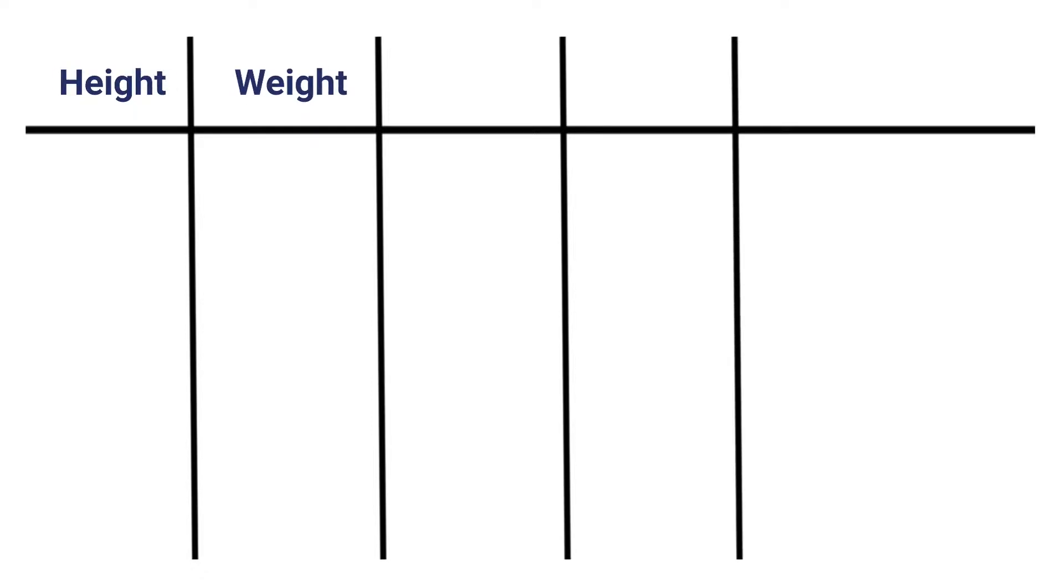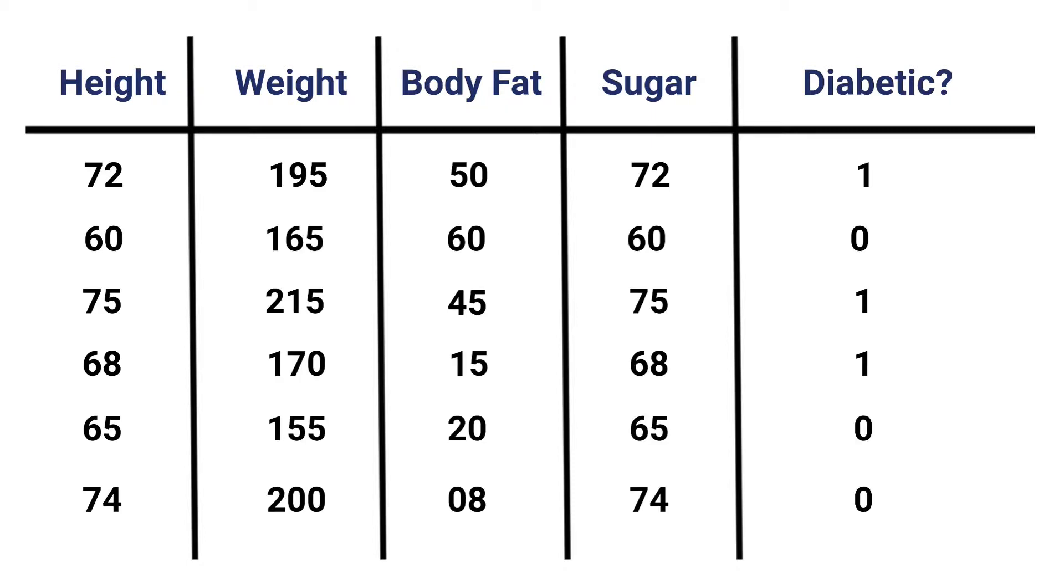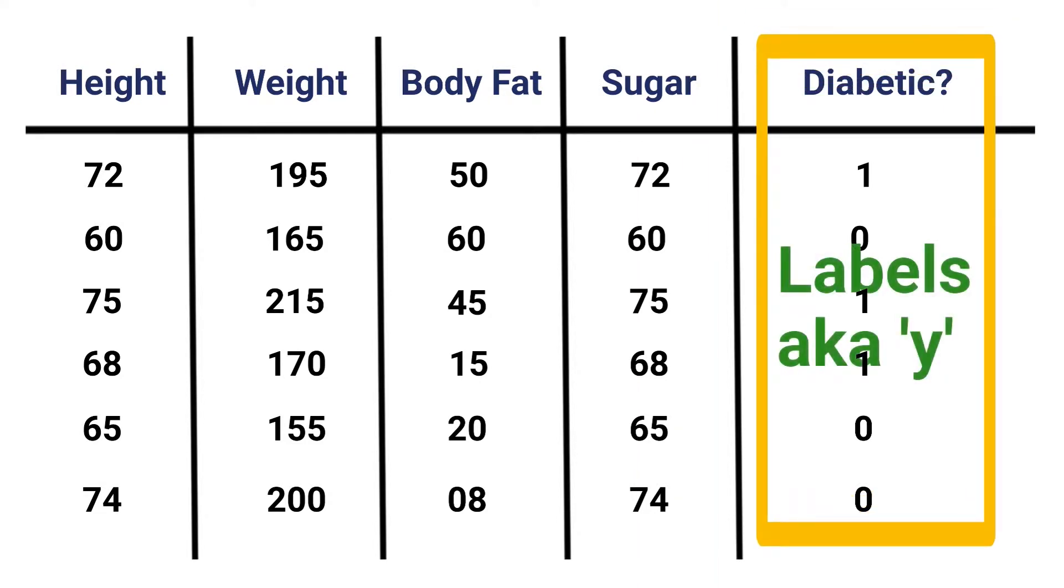So first things first, let's take a look at our data set we're going to be working with here. Now, we're going to be attempting to use our neural network to predict diabetes. So some columns you might find are height, weight, body fat, sugar, and if they're diabetic or not. Now let's go ahead and populate our data set with some data. Okay, so because all values in a neural network, all the data must be numerical, to represent whether or not someone's diabetic or not, we'll just use zero or one. The one means they're a diabetic. The zero means they are not a diabetic.